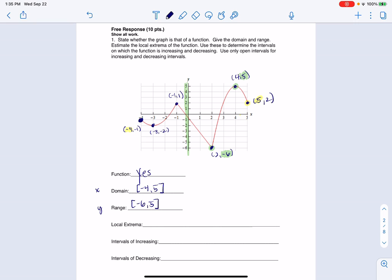Local extrema means get me all the set of maxes and mins, and I actually did that at the very beginning. So I'm just going to write that list here. Now, one thing I want to put is these are always ordered pairs. So they want x and y coordinates. So we've got negative 4, negative 1. Negative 3, negative 2. Negative 1, 1. What else we got? 2, negative 6, 4, 5, and 5, 2.